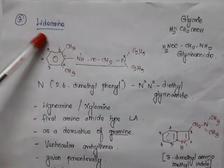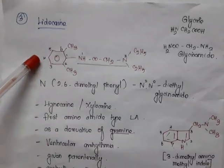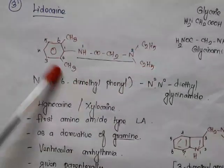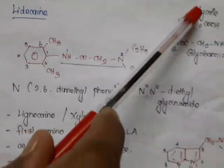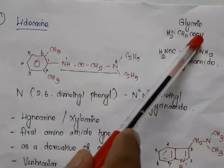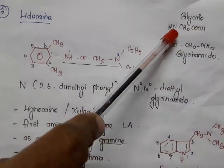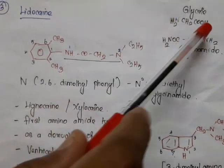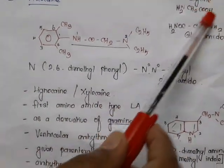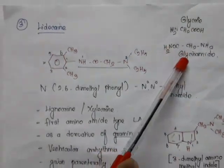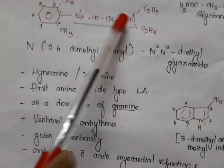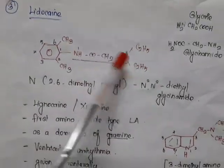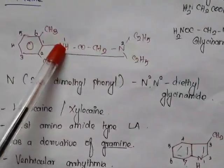Now we'll start with lidocaine. We have already seen two drugs under anti-arrhythmic; the third one is called lidocaine. Looking at the structure, the basic nucleus is glycine amide. Glycine is NH2-CH2-COOH, and if instead of the acid we have an amide, that is called glycine amide: NH2-CH2-CONH2. Glycine amide is the parent structure, having two nitrogens.